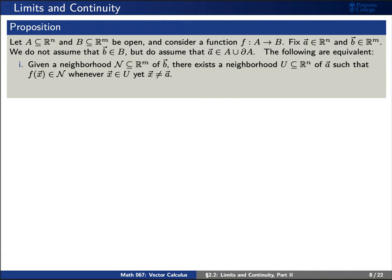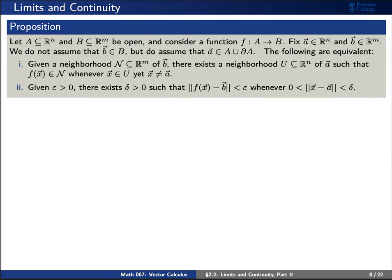Number one: given a neighborhood N of our vector b, there exists a neighborhood U of our vector a such that f(x) is contained inside of N whenever x sits inside of U. This is equivalent to saying — given a positive epsilon, there exists a positive delta such that the distance of f(x) away from b is less than epsilon whenever the distance from x to a is less than delta.